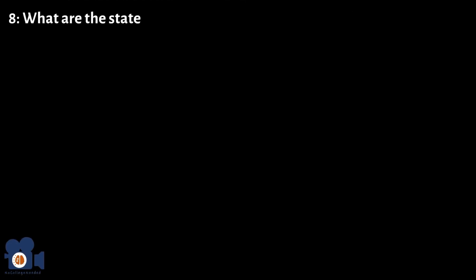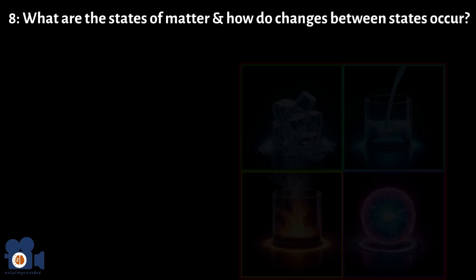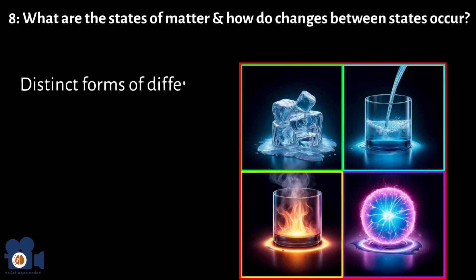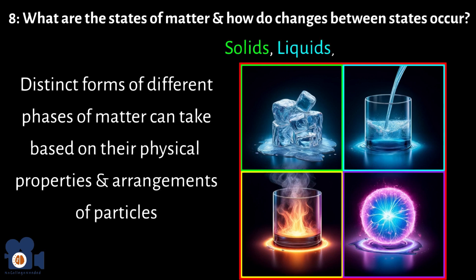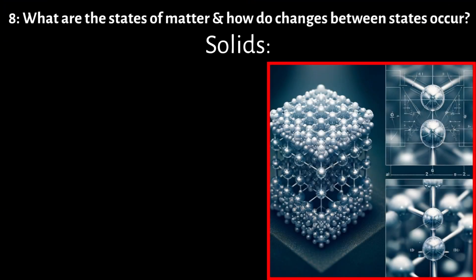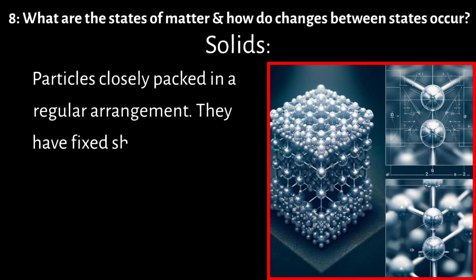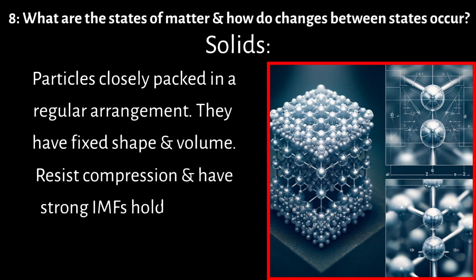Number 8: What are the states of matter and how do changes between states occur? The states of matter are the distinct forms that different phases of matter can take based on their physical properties and arrangements of particles. The most common states of matter are solids, liquid, gases, and plasma. In a solid, particles are closely packed together in a regular arrangement, with a fixed shape and volume. Solids resist compression and have strong intermolecular forces holding their particles together.